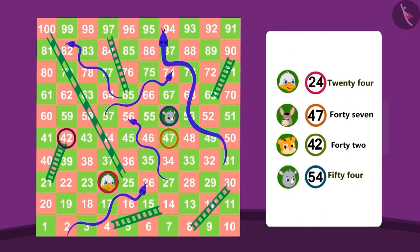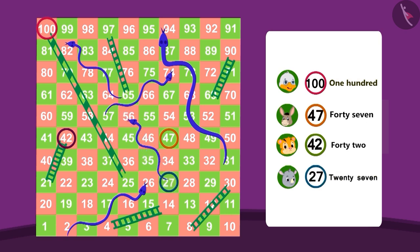Let's see how uncle won this game and where are the other players. Oh, uncle got a ladder straight up to 100. And poor Gugu was swallowed by a snake straight down to 27.